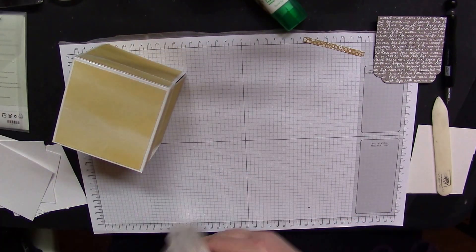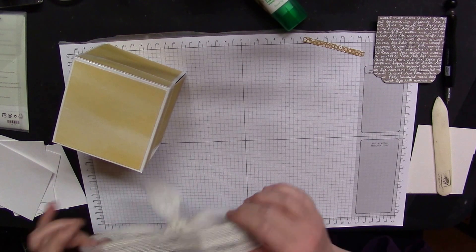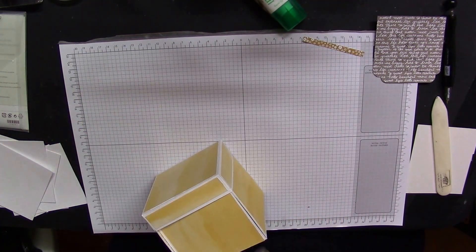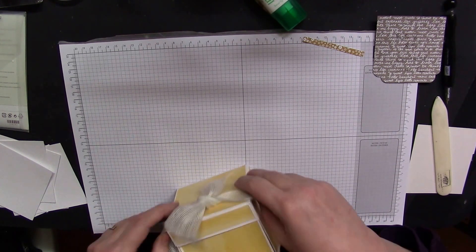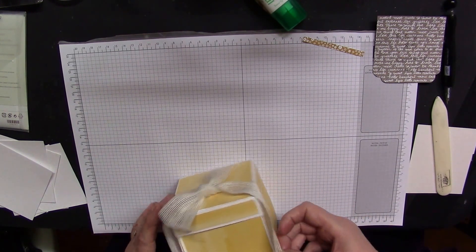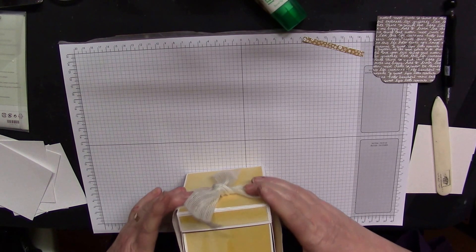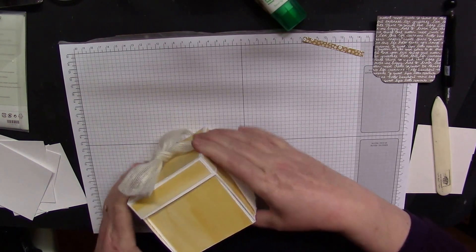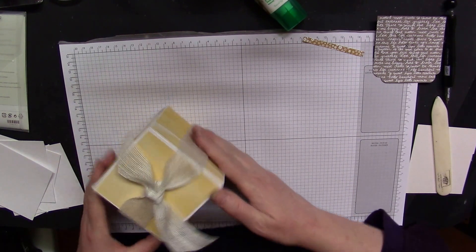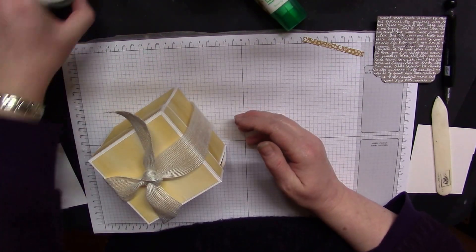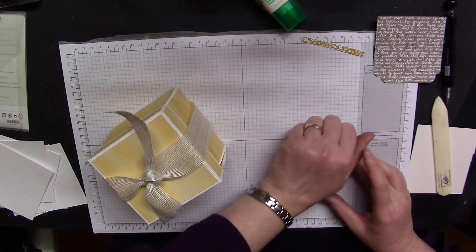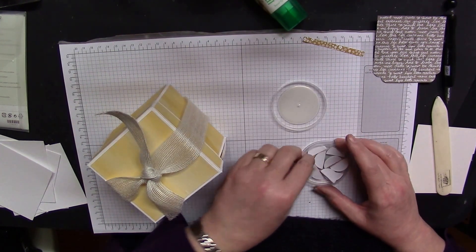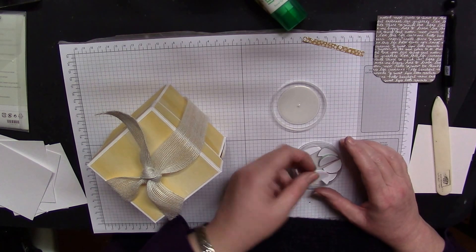And decorate it with a piece of the jute ribbon and just have a nice big bow. Well, it's not a bow, it's just a knot on the top.